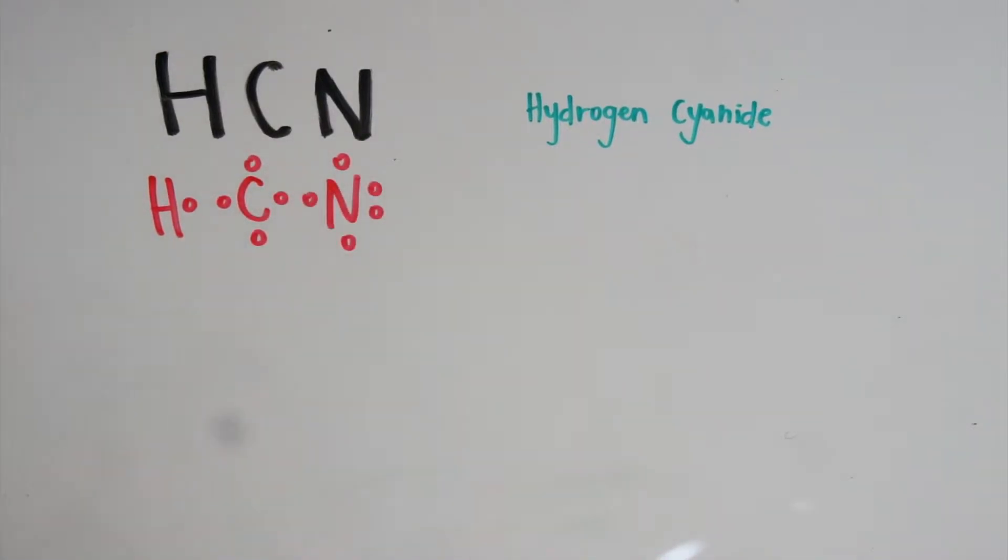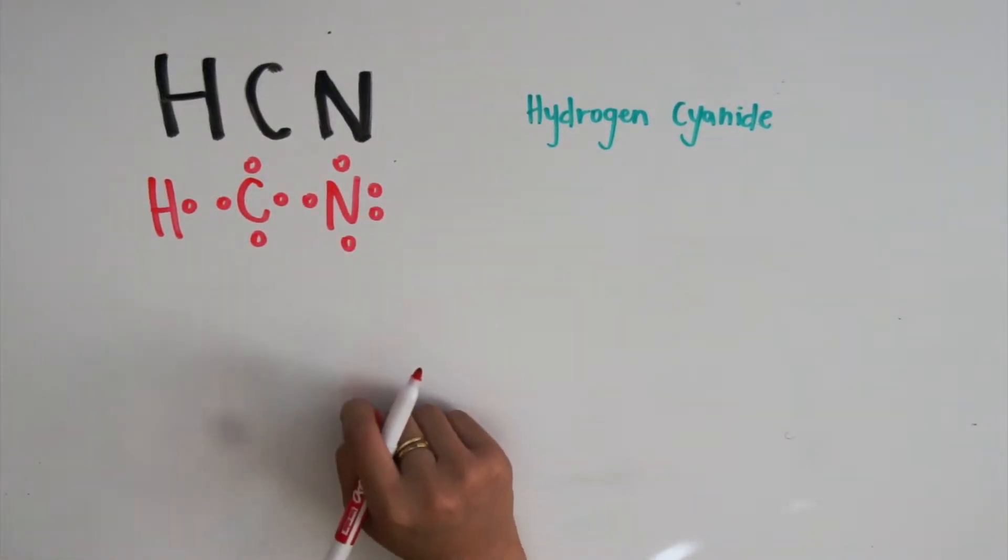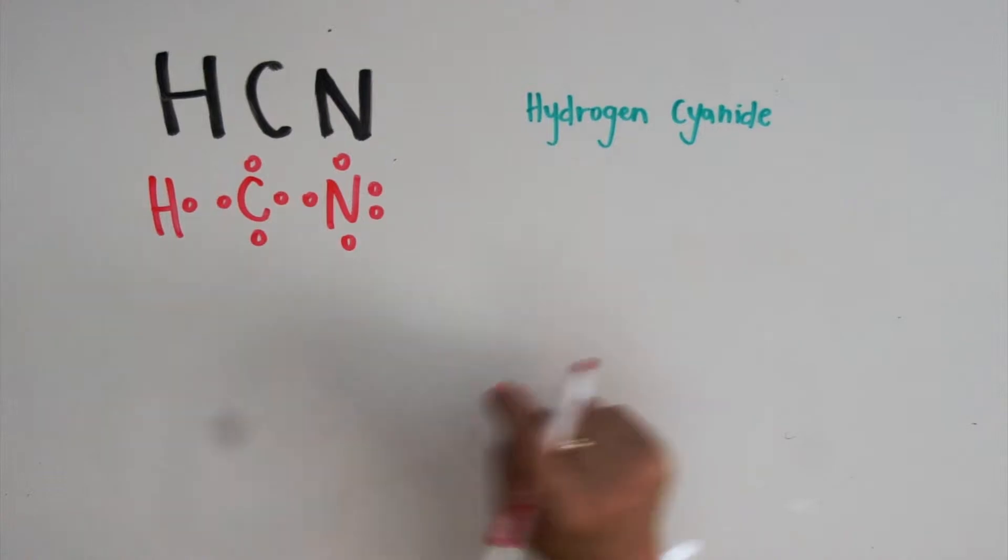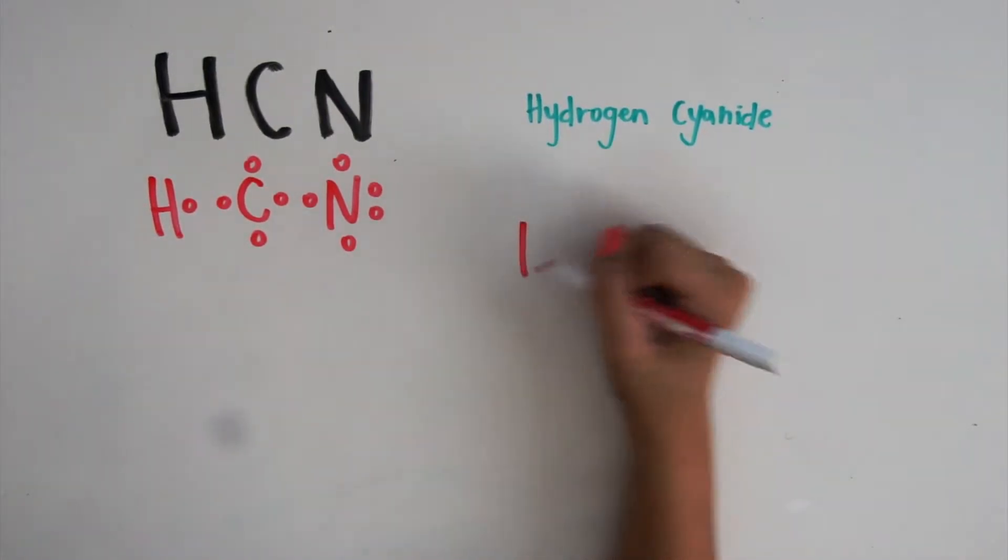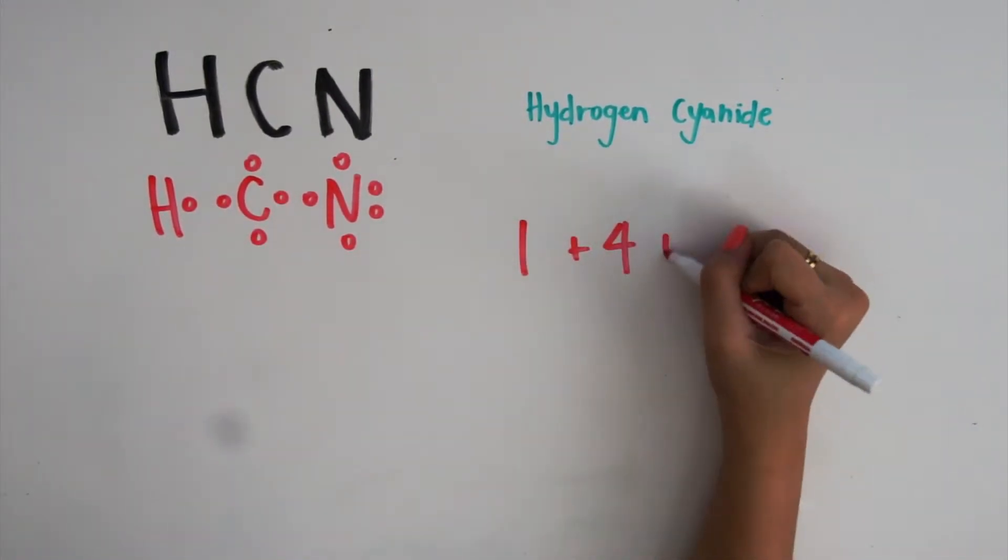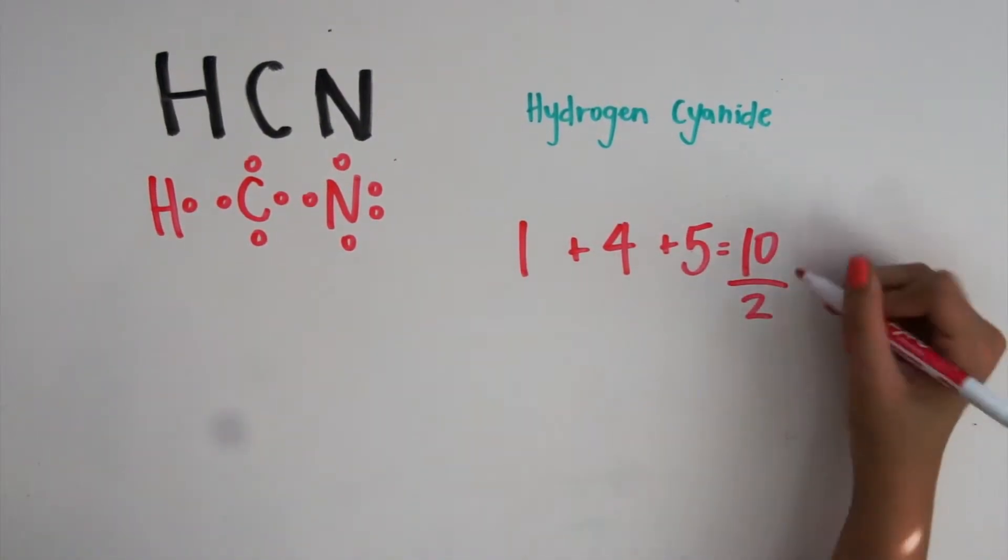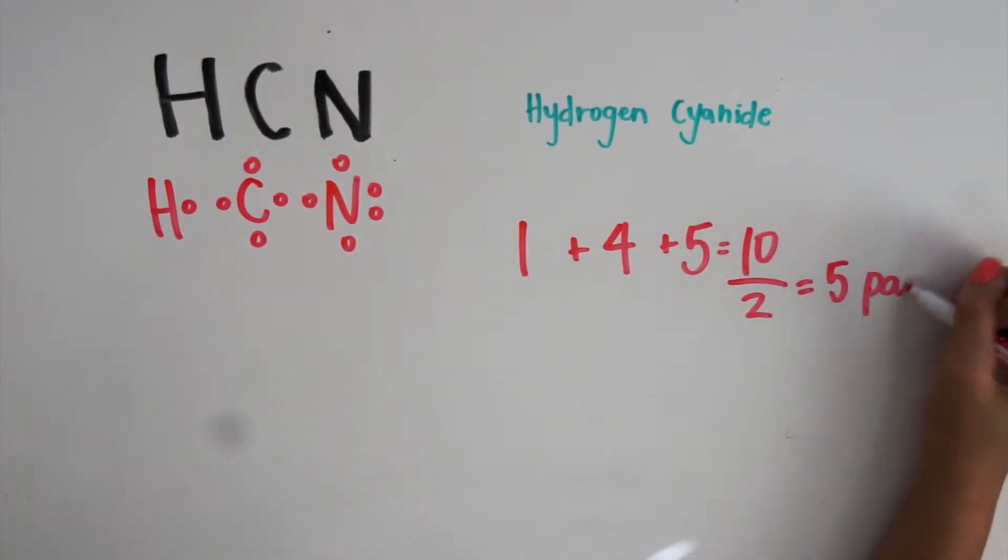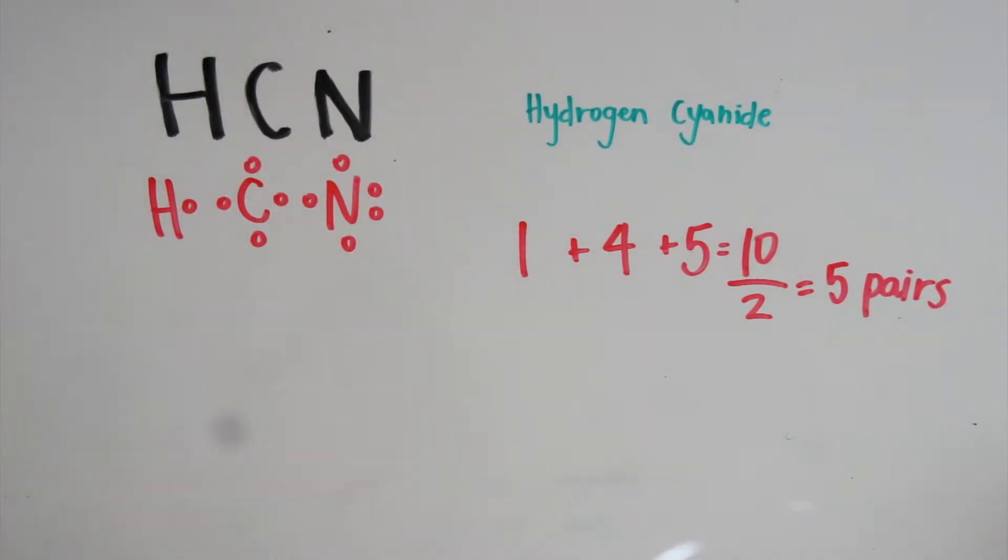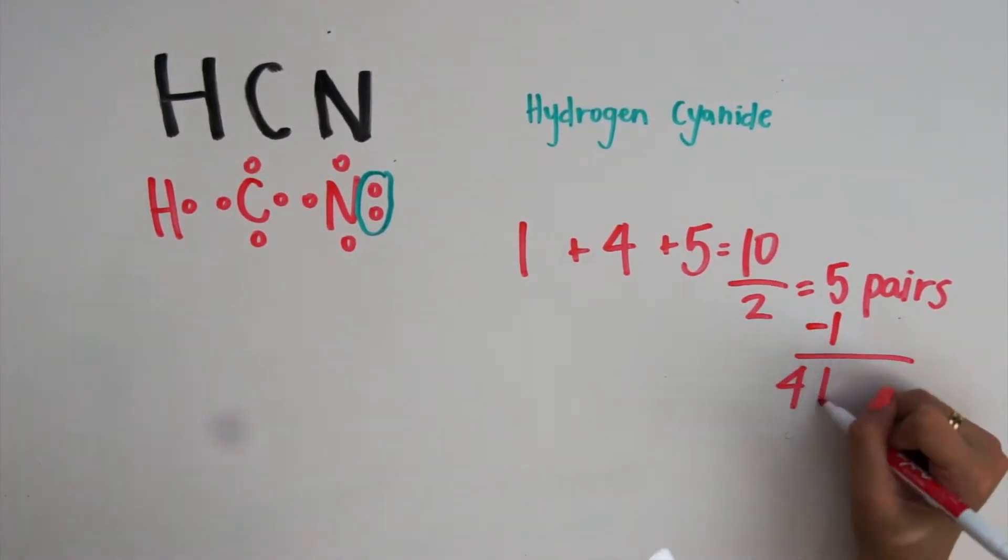To determine how many bonds your structure will have, you must add these electrons. So 1 plus 4 plus 5 will get you 10. Then you divide this number by 2, which gives 5 pairs. Then you subtract the number of unshared pairs. There is one unshared pair in nitrogen. 5 minus 1 equals 4 bonds.